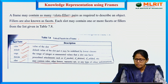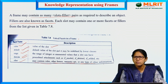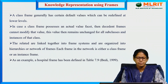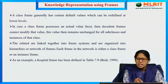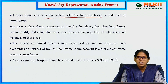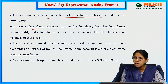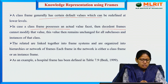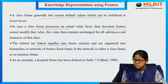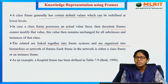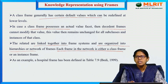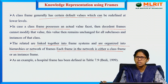Other rules, other frames, semantic nets — any type of information can be added to a frame. A slot can contain other frames as well. A class frame generally has certain default values which can be redefined at lower levels. If a class frame possesses an actual value facet, it cannot be modified by descendant frames. Related frames are linked into a frame system organized into hierarchies or networks. Each frame in the network is either a class frame or an instance frame. The class frame has extensions to the network; the instance frame cannot.